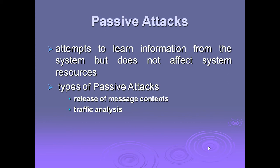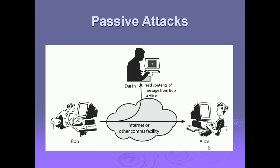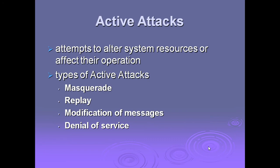This is the diagram of passive attacks, in which there are two persons — Bob and Alice — communicating through the internet or another communication channel. There is an attacker that reads the contents of the message from Bob to Alice.